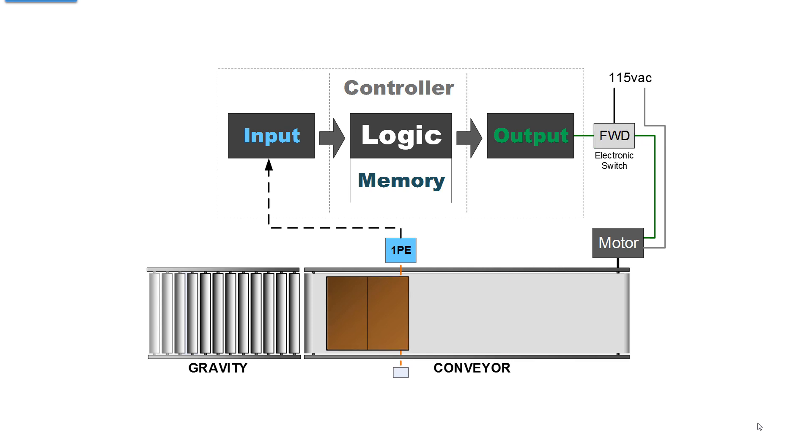The logic that was in your head that's now cloned into the controller states that if the photo sensor is not blocked, the conveyor runs. If the photo sensor is blocked, then the controller through the output releases the contacts and the conveyor motor de-energizes and there sets the object.